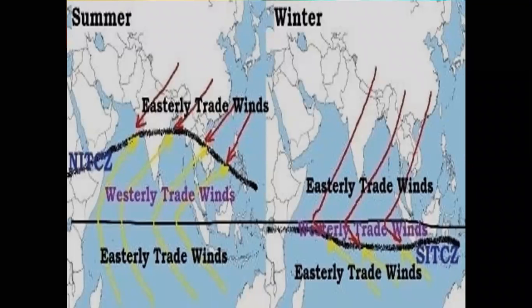The monsoon winds flow over India, Pakistan, Bangladesh, Myanmar, Sri Lanka, the Arabian Sea, the Bay of Bengal, Southeast Asia, Northeast Australia, China, and Japan. Outside India, in Eastern Asiatic countries such as China and Japan, the winter monsoon is stronger than the summer monsoon.